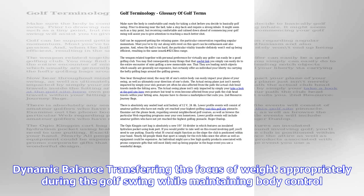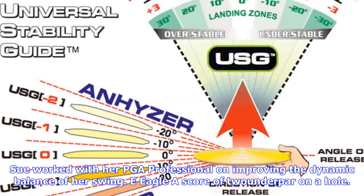Cupped wrist: a position in which the left or top hand is hinged outward at the top of the backswing. Her cupped wrist caused the club to be pointed to the left of the target at the top of her swing.